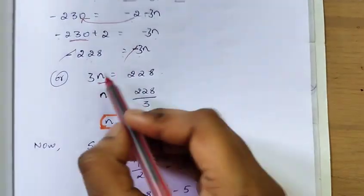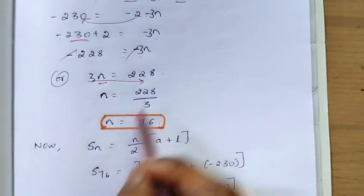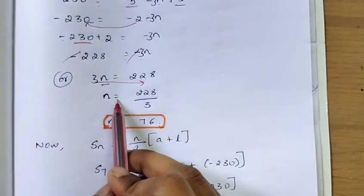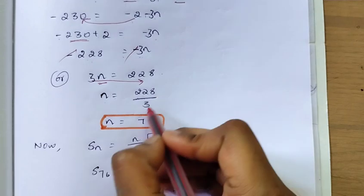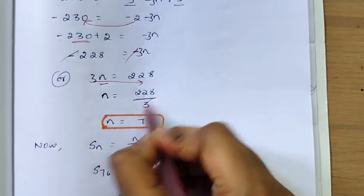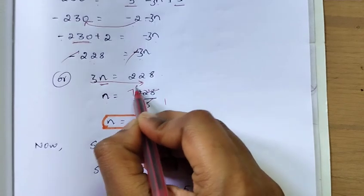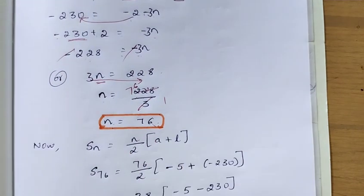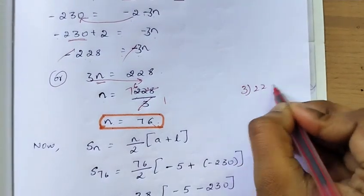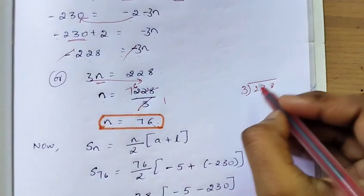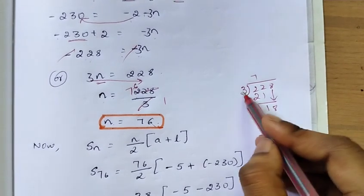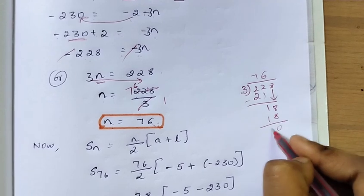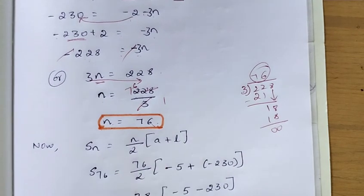Dividing both sides by 3: n = 228 divided by 3. Performing the division — 3 sevens are 21, carry 1, 3 sixes are 18 — so n = 76. Therefore, the number of terms in the series is 76.